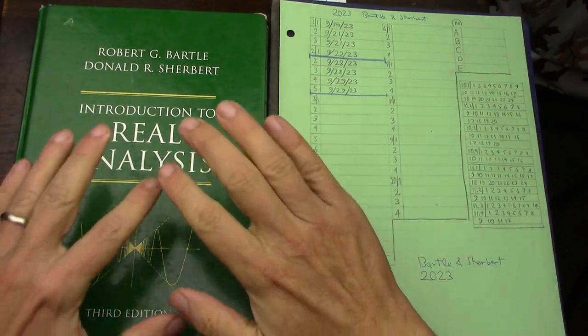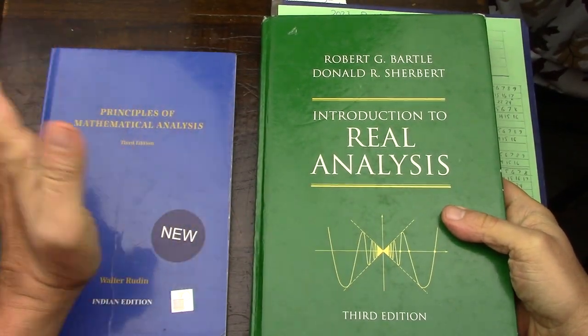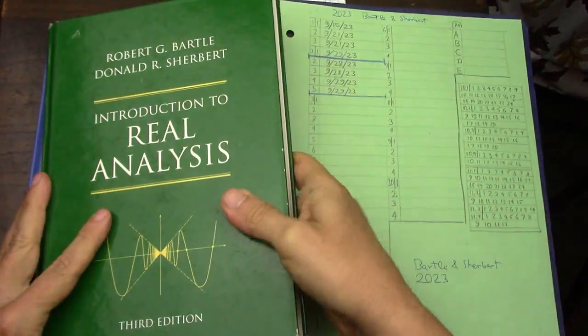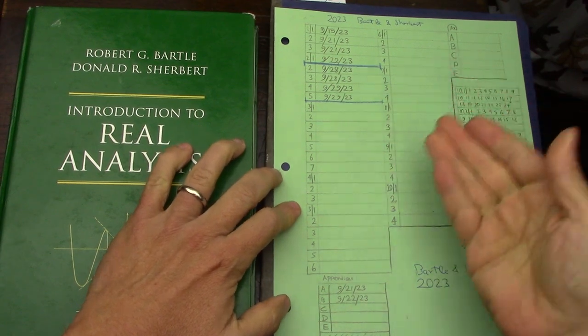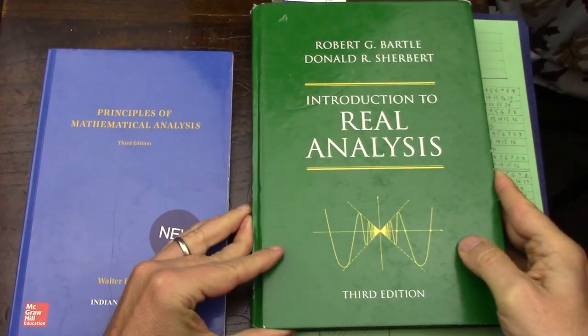This is the first video in a playlist for Bartle and Sherbert. I am reading the book as part of my Baby Rudin project. There are other videos in the channel for this. And in this video I'm going to talk about chapters 1 and chapter 2 and the general things about this book.